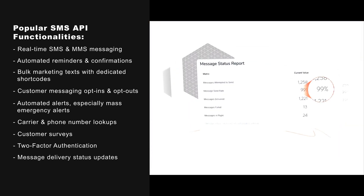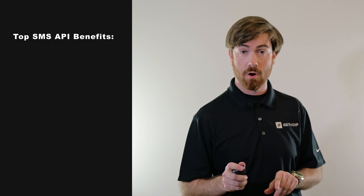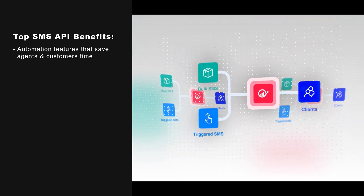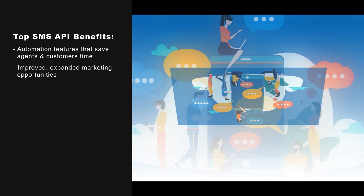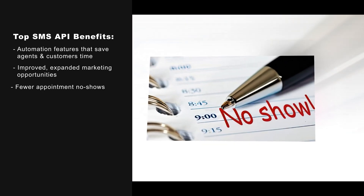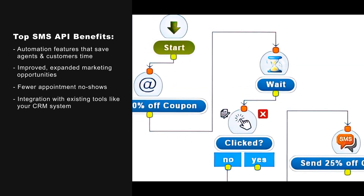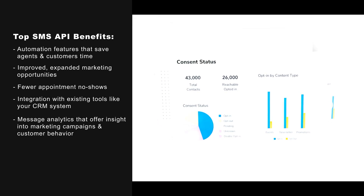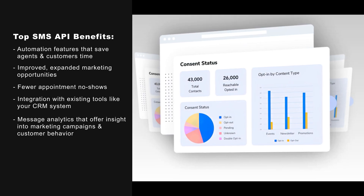The top benefits of SMS APIs are automated features that save agents and customers time, improved and expanded marketing opportunities, fewer appointment no-shows, integration with existing tools like your CRM system, and message analytics that offer insight into marketing campaigns and customer behavior.